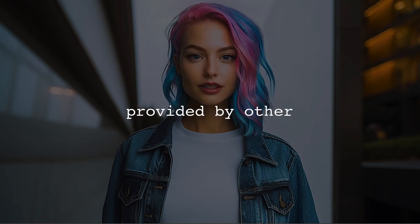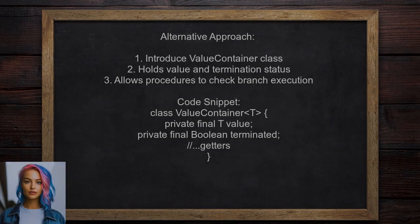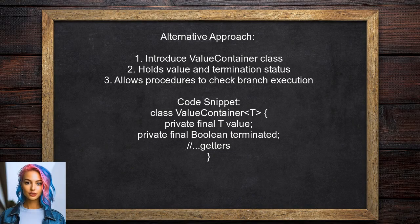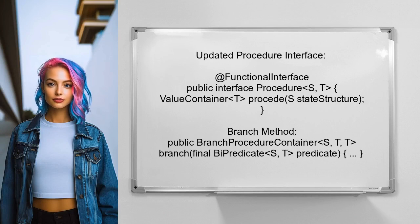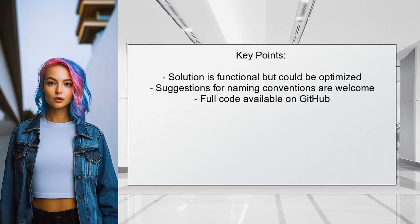Now, let's look at the answers provided by other users. In this alternative approach, the user introduces a solution using a value container class to manage branching in lambda compositions. This class holds a value and a termination flag, allowing the procedure to determine if a branch was executed or not. The user rewrites the procedure interface to return a value container instead of a direct value. This simplifies handling of terminated branches and integrates seamlessly with the procedure container class, which now includes a branch method. The user notes that while this solution works, it could be improved by reducing the number of checks for termination, and they invite suggestions for better naming conventions and optimizations.